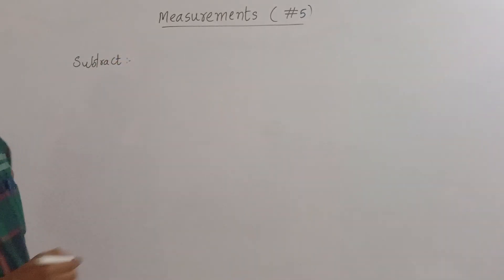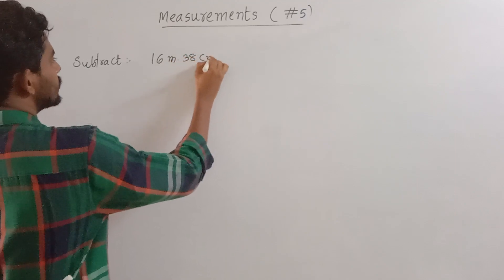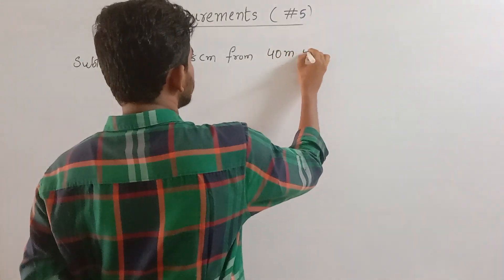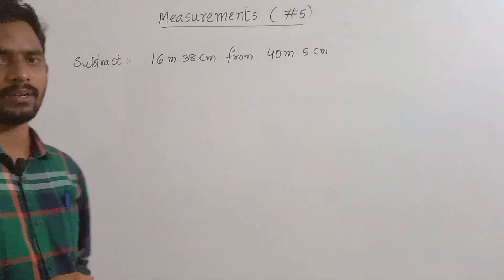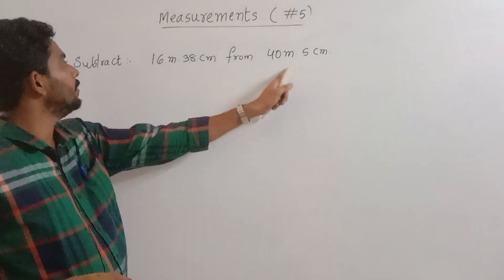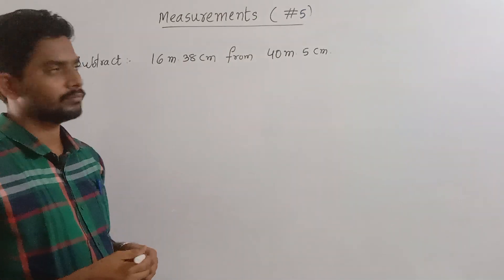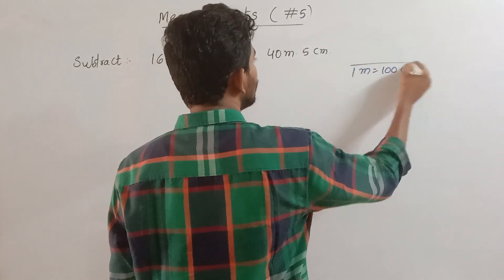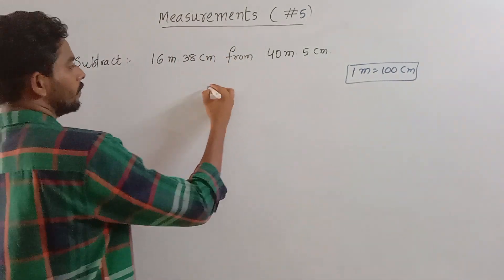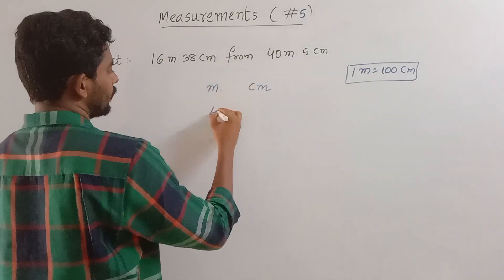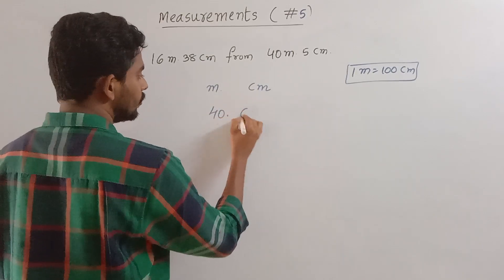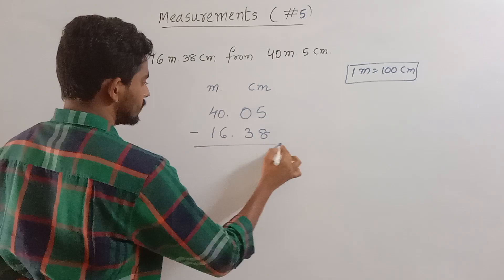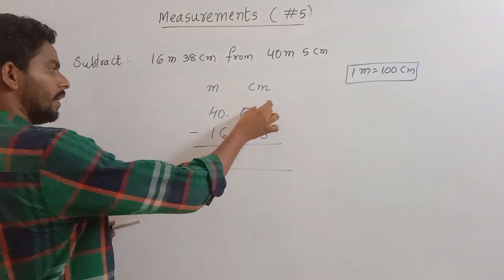Subtract 16 meters and 38 centimeters from 40 meters and 5 centimeters. Now we take meters and centimeters. Under the whole meter, we use 100 centimeters. 40.05 minus 16.38. Minus 38 minus 38 equals 5, and 5 equals 8.